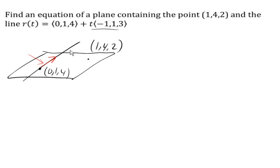So this vector (-1, 1, 3) is already a vector in the plane. Now we need a second vector in order to find an equation for the plane, and so for that we can draw a vector from this point (0, 1, 4) to the point (1, 4, 2). And drawing that in, that gives us the vector (1, 3, -2).